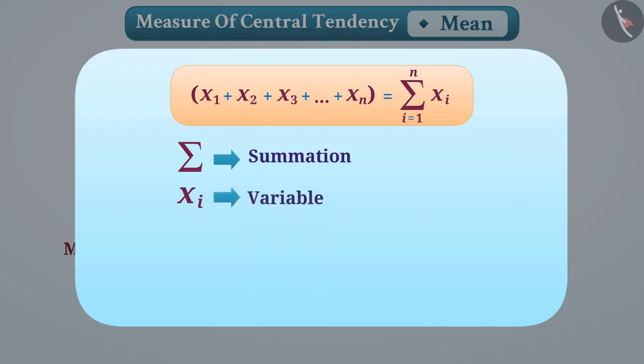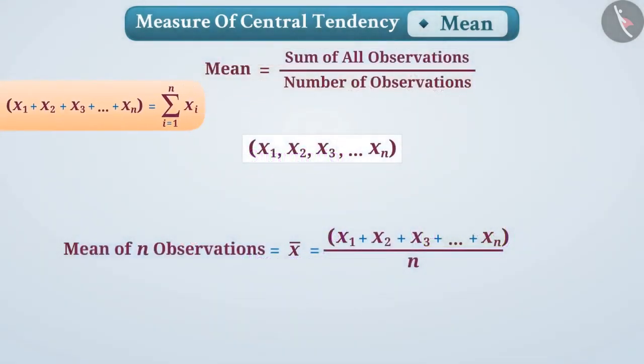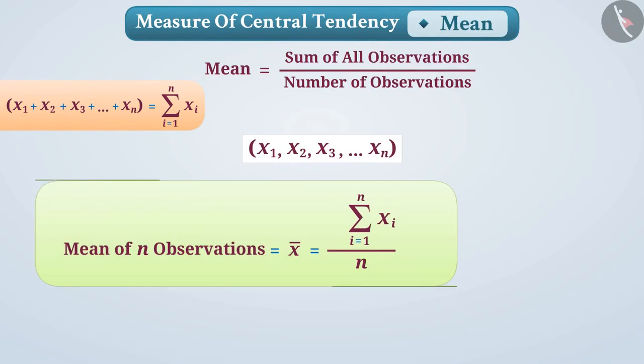X_i is a variable where i is any natural number from 1 to n. We read it as summation of X_i where i ranges from 1 to n. Here n represents the number of observations. With its help, we can now represent the mean in this way. We use this formula to obtain the mean of the data.